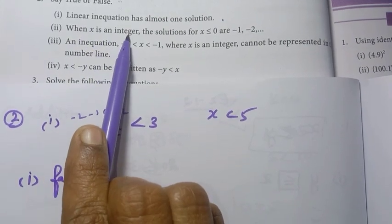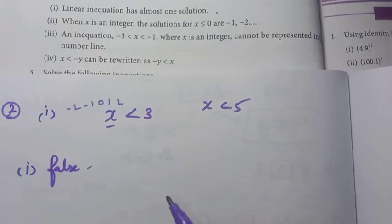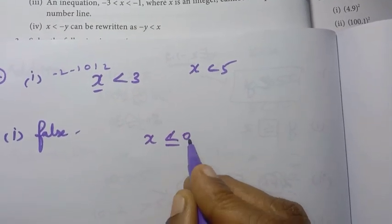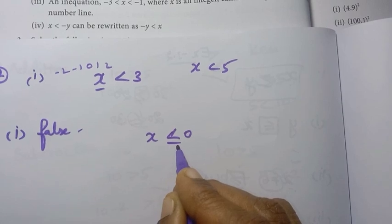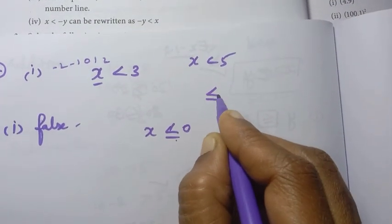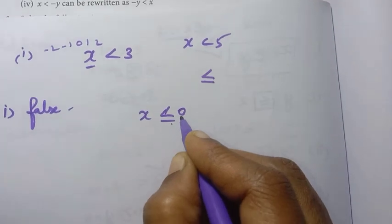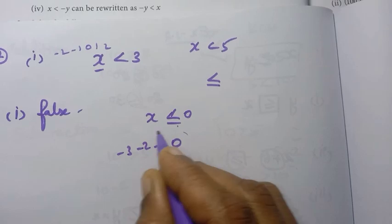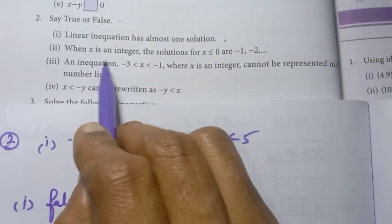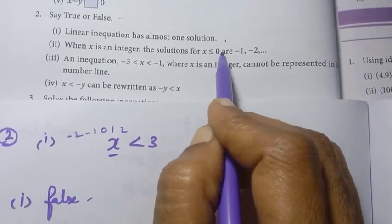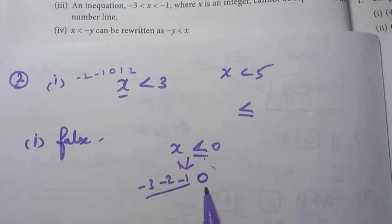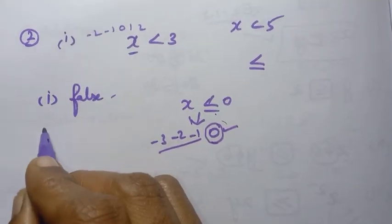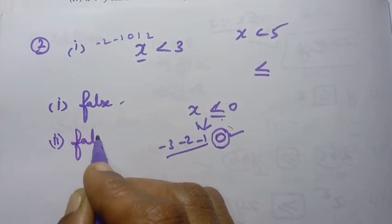Second statement: when x is an integer, the solutions for x less than or equal to 0. If x is less than or equal to 0 and x is an integer, there are many values satisfying it. That is why this second statement is also false.